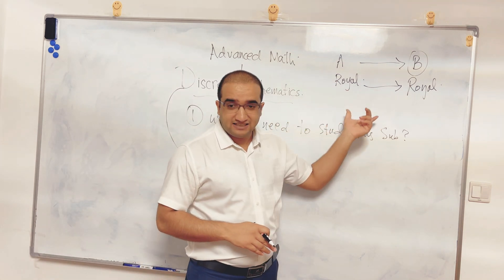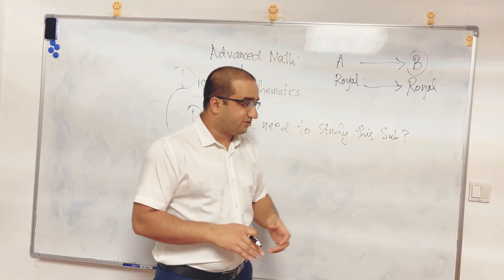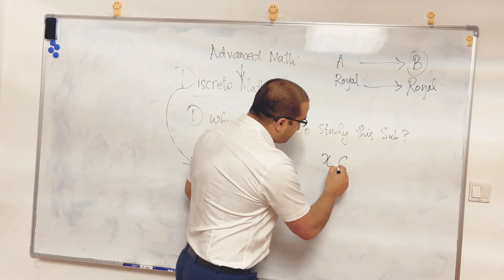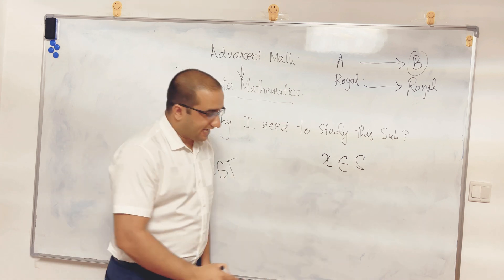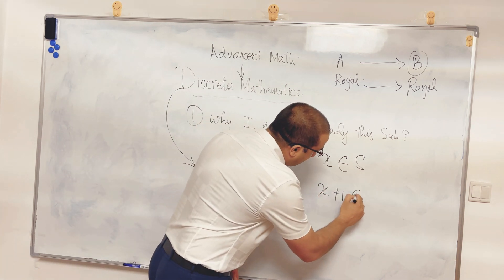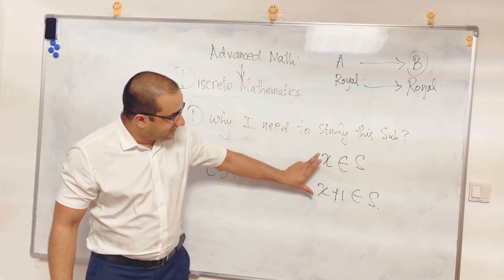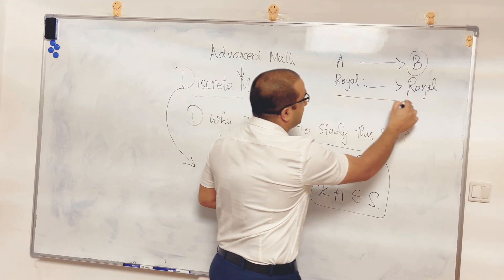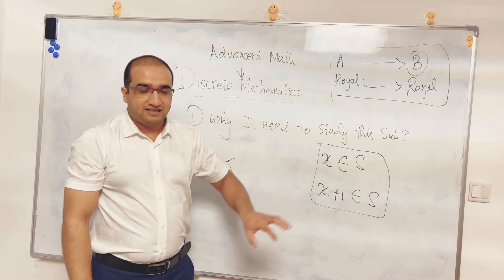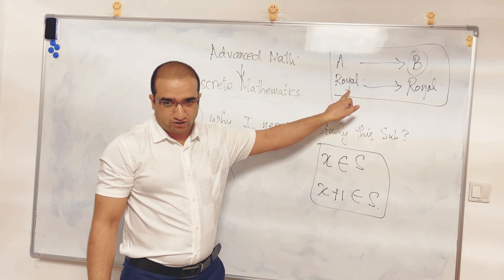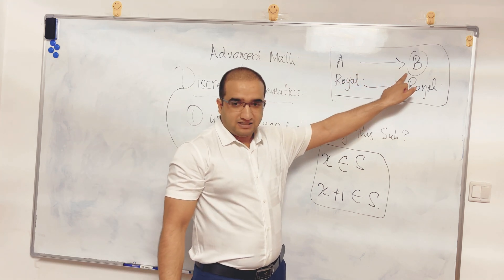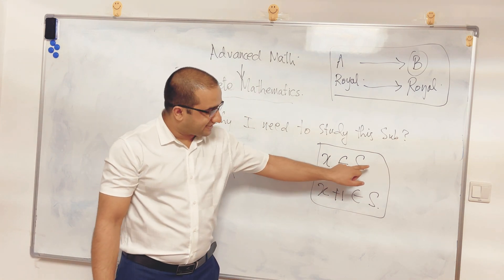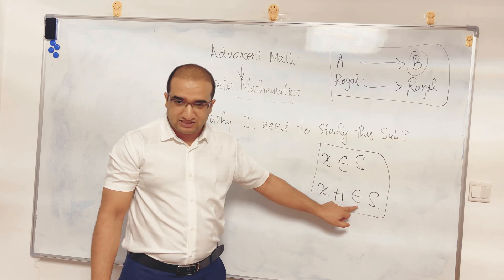Now, how to write this thing in mathematics? So it is very simple. If X is something that belongs to a family S, then X plus 1 will also belong to the S. Now, this thing is exactly equal to this thing. A person belongs to the royal family, so his son will also belong to the royal family. X belongs to the set S. X plus 1 will also belong to the set S.